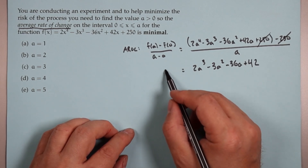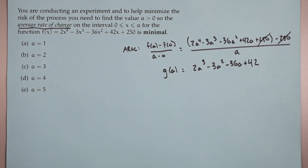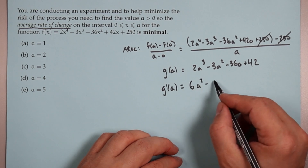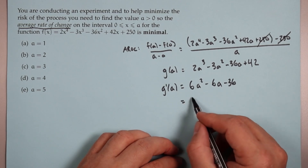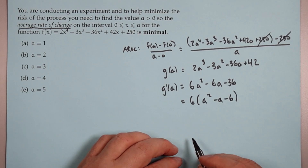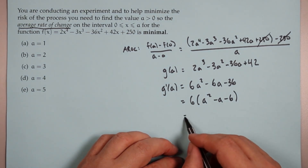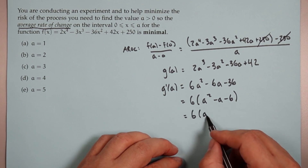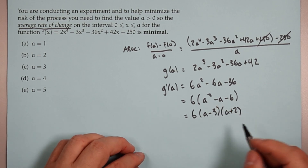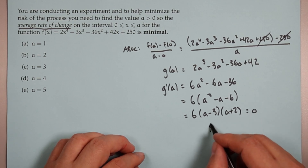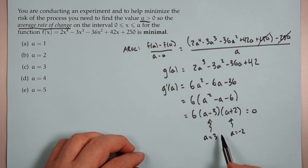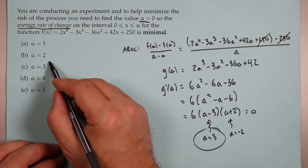Let's call this function g(a) — that's what we're trying to minimize. Take the derivative: g'(a) equals 6a² minus 6a minus 36. Factor the 6 out: a² minus a minus 6. It factors as (a minus 3)(a plus 2). Set it equal to 0. That gives us a equals 3 or a equals negative 2. But we want a positive, so the only option is a equals 3. The answer is C.